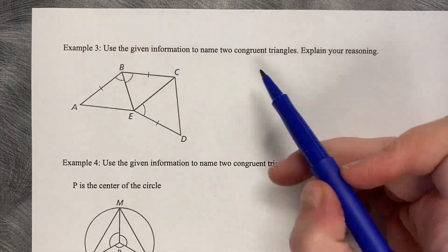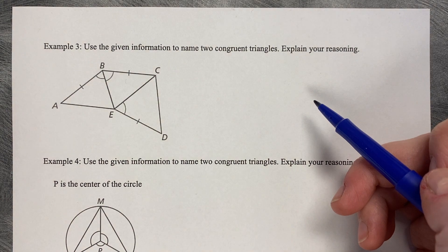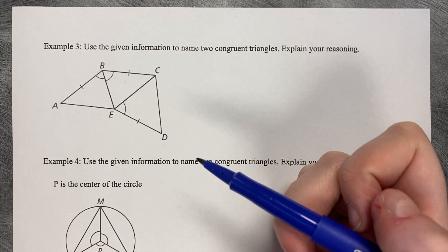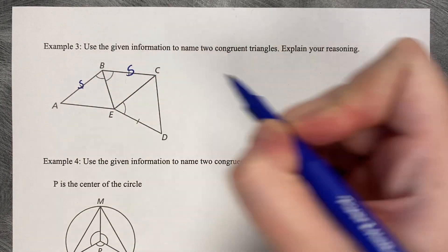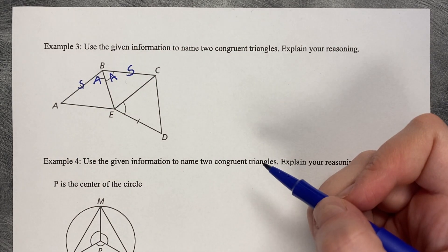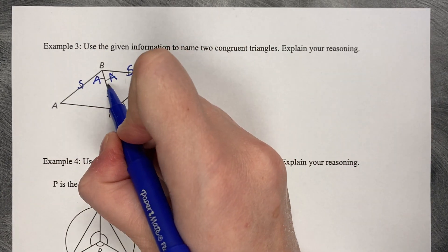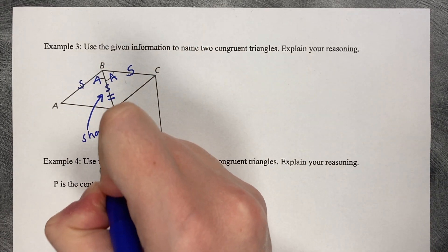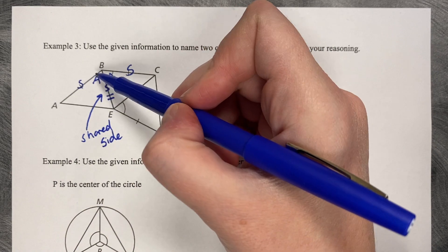Example 3: use the given information to name two congruent triangles and explain your reasoning. We can identify an S that matches, an A that matches, and then one more side length that matches — a shared side length. I'll put a double tick mark on that shared side. So I can see SAS — the two triangles share that side, which is the same length, confirming SAS.